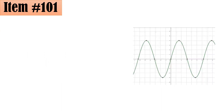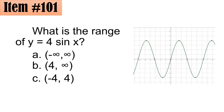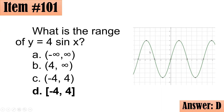Item 101: What is the range of y = 4 sin X? Letter A (negative infinity to infinity) is actually the domain of the sine function. The lowest Y value is -4 and the highest peak is 4, both included. Letter C is an open interval which excludes -4 and 4, but they should be included. Therefore we choose the closed interval [-4, 4], letter D.